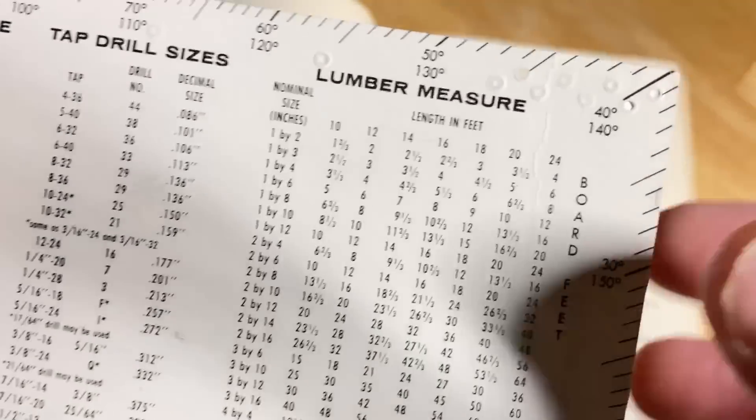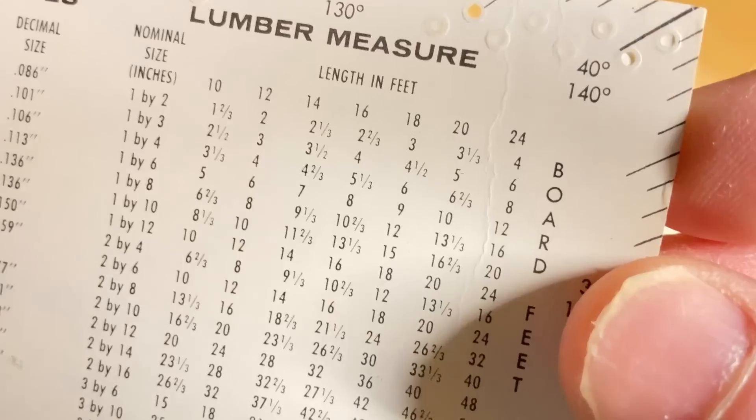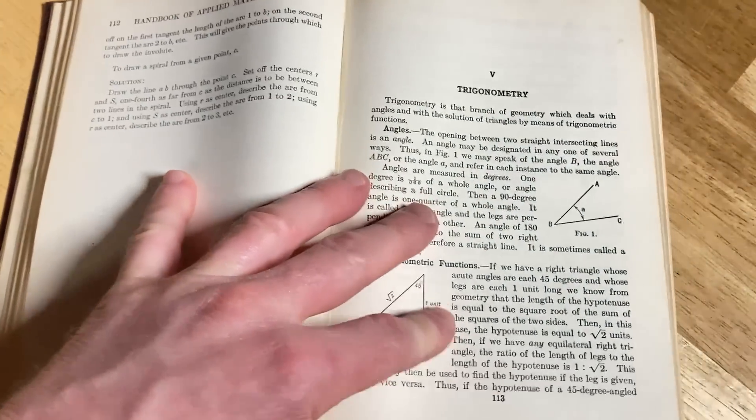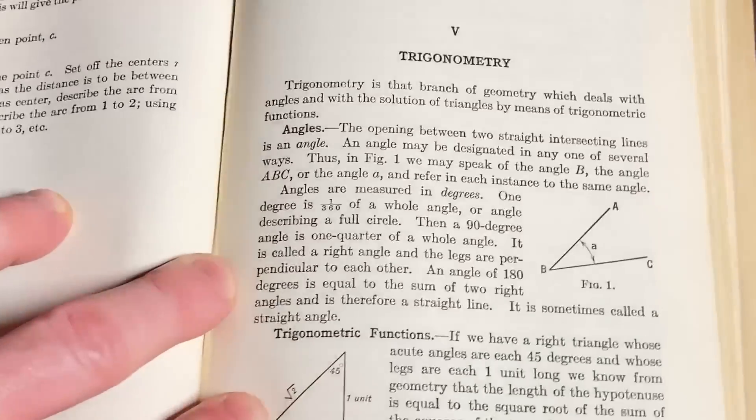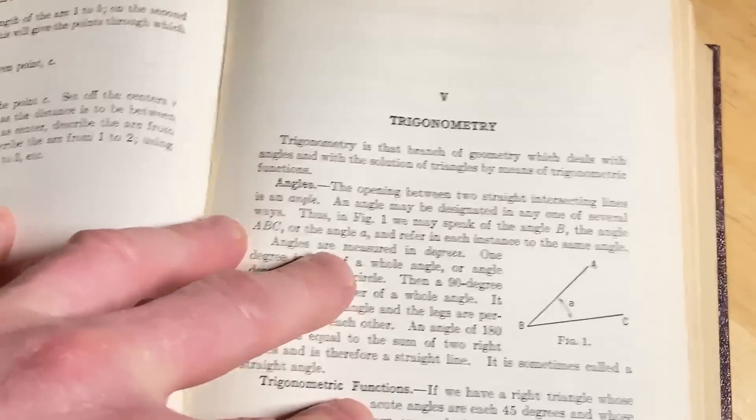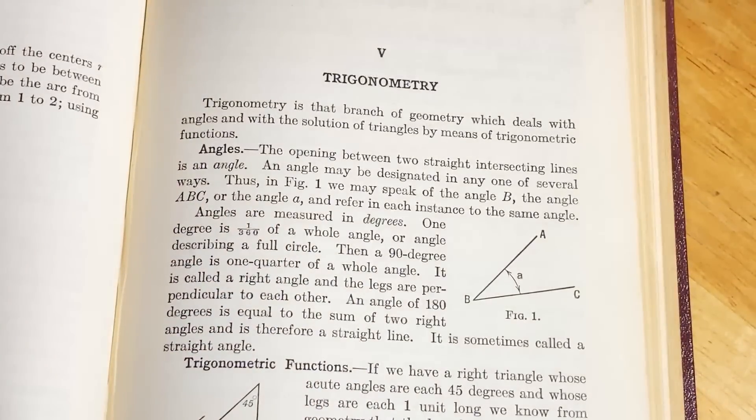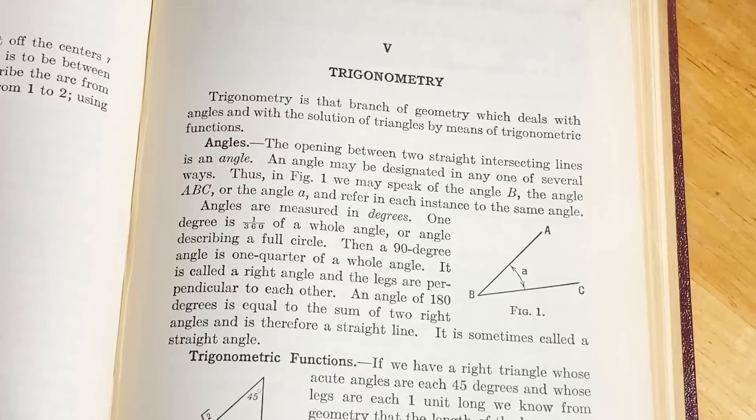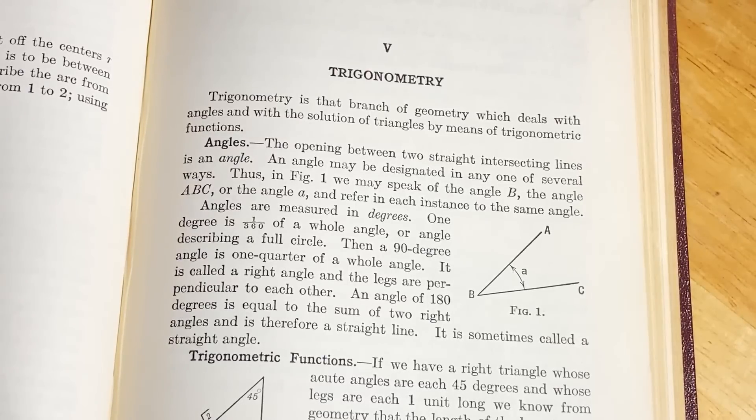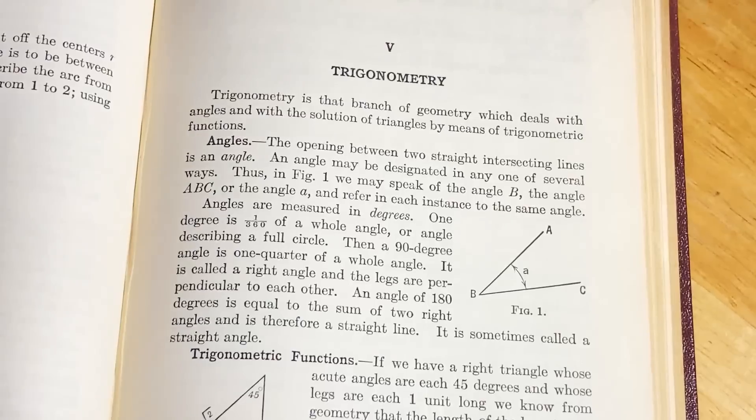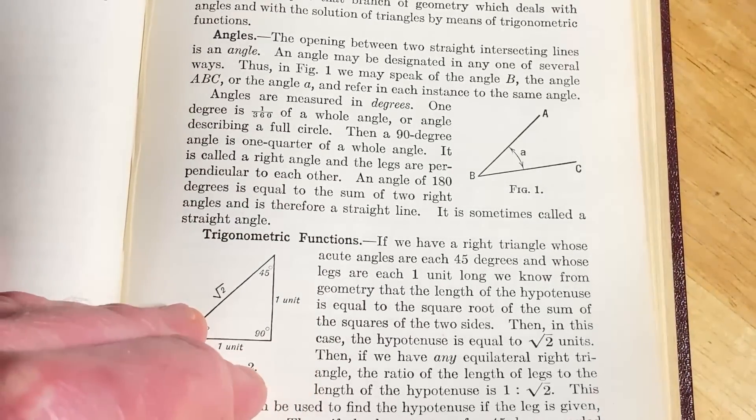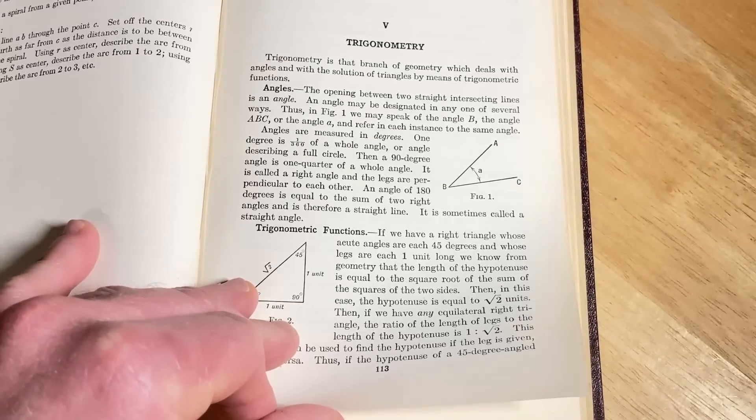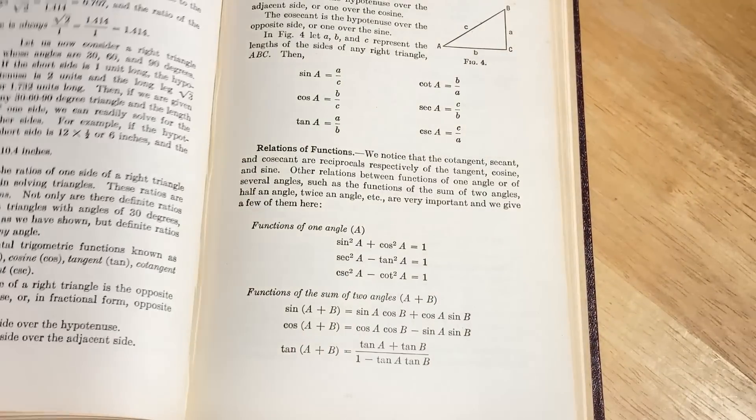So, interesting little thing here. Lumber measure. Board feed. So, just all kinds of stuff. Trig. Look, it's got trigonometry. So, not just basic arithmetic. We've also got some trig. Let's see what it says here. Trigonometry is that branch of geometry which deals with angles and with the solution of triangles by means of trigonometric functions. Here, it talks about angles. So, in theory, you could use this book to learn mathematics.